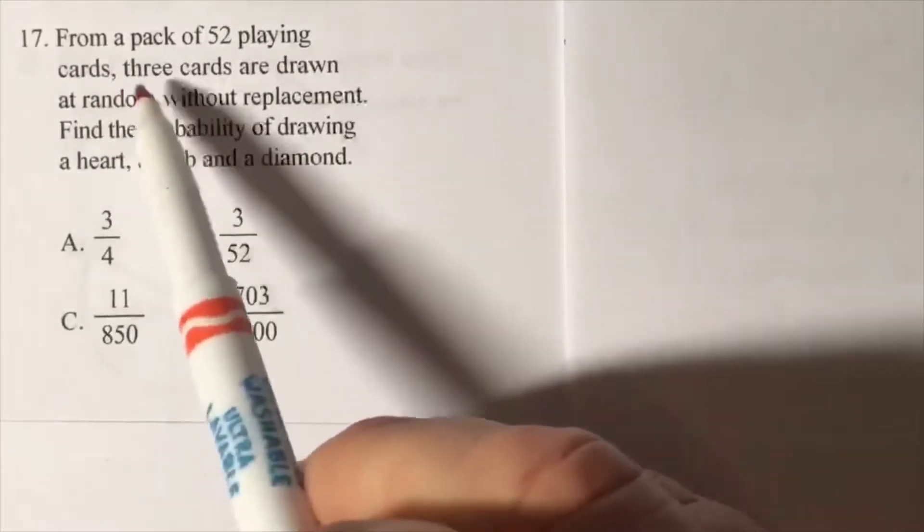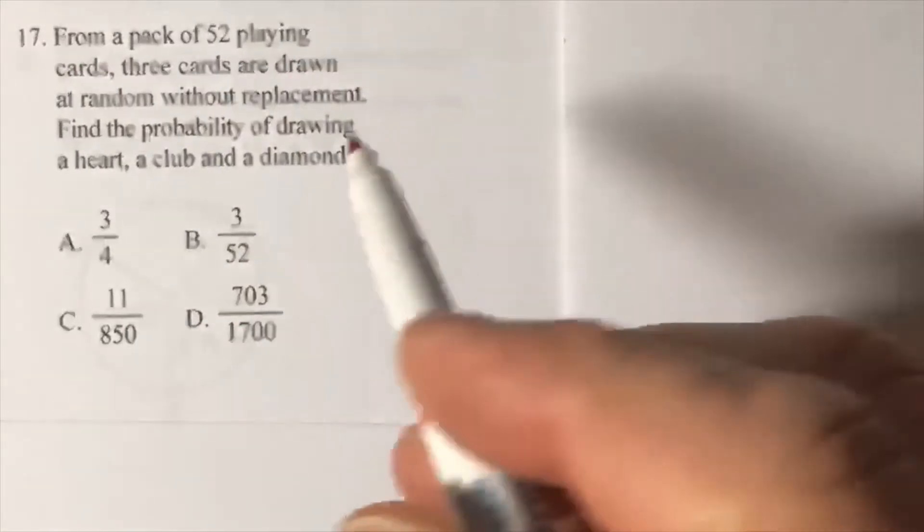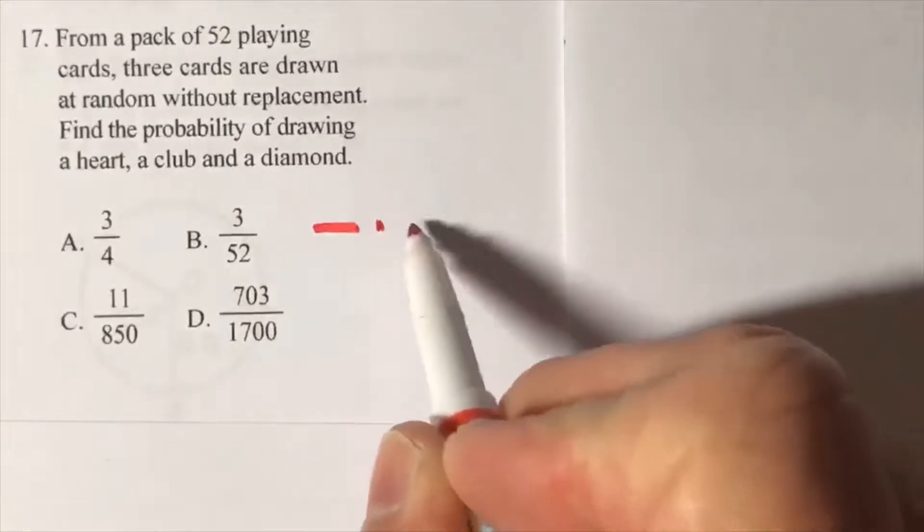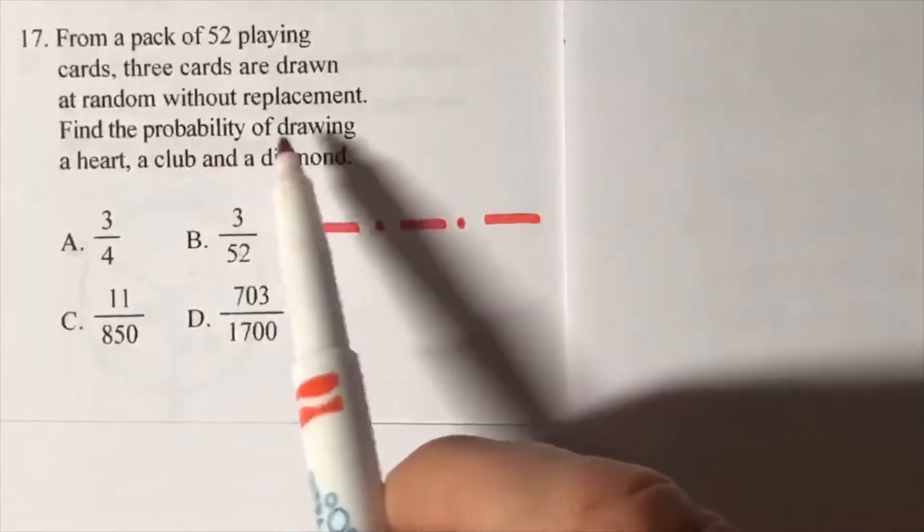From a pack of 52 playing cards, three cards are drawn at random without replacement. We're going to have three fractions. Find the probability of drawing a heart, a club, and a diamond. How many hearts?